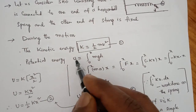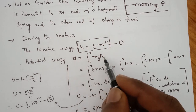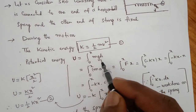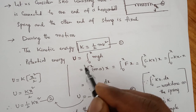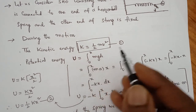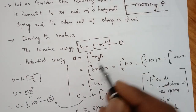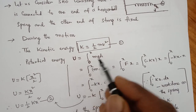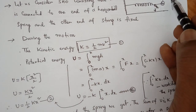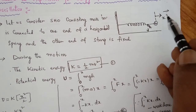For potential energy, U is equal to the integration of mgh. Actually U equals mgh. Before the spring is at rest, the displacement is zero. After applying some force, there is a displacement x.